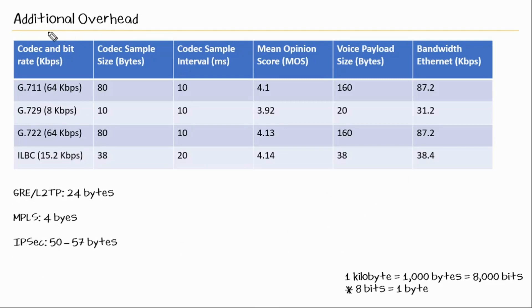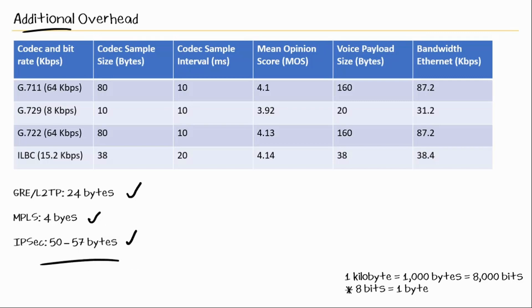Now you could have additional overhead if you're using any tunneling protocols — also if you're doing MPLS, which is a protocol for transporting traffic, or if you're doing IPSEC, which is a set of protocols for encrypting traffic. Keep this in mind based on your environment, depending on what you're actually using in your network. But for this example, we'll just assume that we're not using any of this.